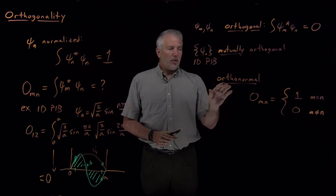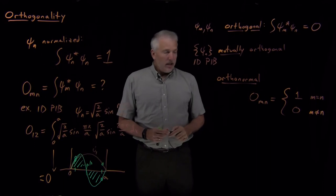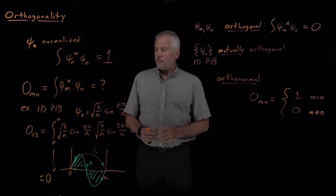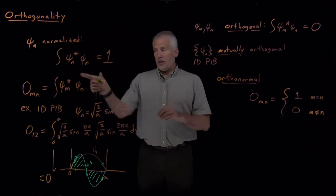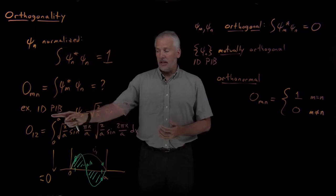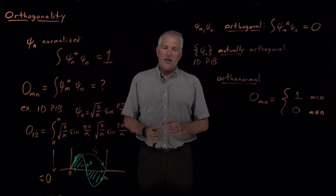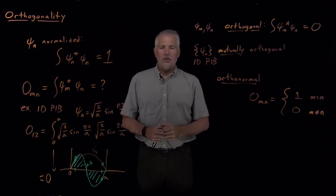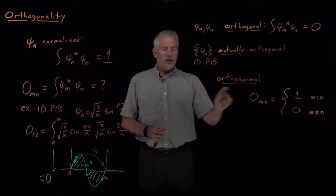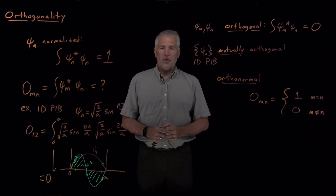Having orthonormal vectors is particularly convenient for reasons we'll see soon. It's also convenient that not just for the one-dimensional particle in a box, but for any quantum mechanical problem we choose to solve, we'll get a set of wave functions that we can normalize and make orthogonal to one another. If they don't come out automatically orthogonalized, there's a procedure we can apply to ensure mutual orthogonality. So quantum mechanical problems can always be set up so that the wave functions are orthonormal, and that's convenient because we can use those orthonormal wave functions to construct other functions — which is what we'll talk about next.